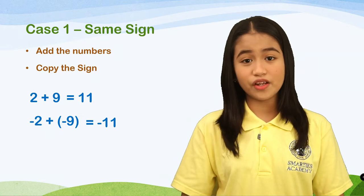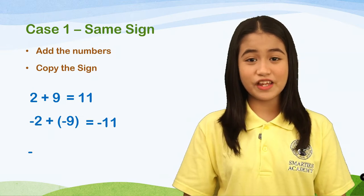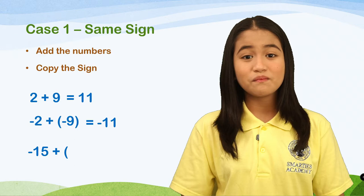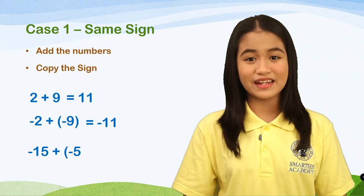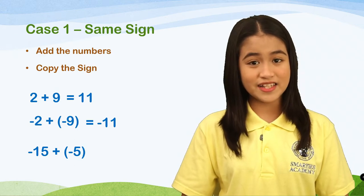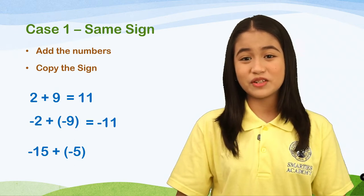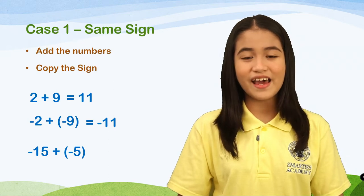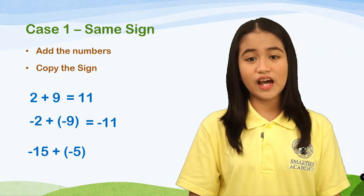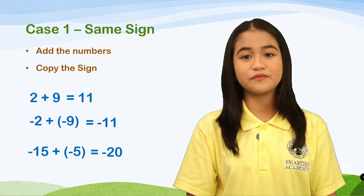Let's have another one: negative 15 plus negative 5. Both of them are negative, so they have the same sign. Just add the numbers 15 and 5, and the answer is 20. Then copy the sign, which is negative 20.